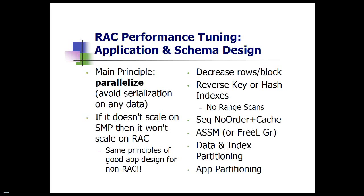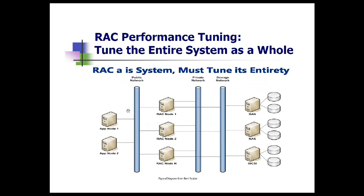It's also possible to partition at the application level, and sometimes that's the simplest best thing to do. The way Facebook manages to run a massive application on MySQL is by partitioning the application — certain tables go to one group of nodes, others to another group handling status updates. You can do something similar with RAC: say you have three applications on a cluster, and each application uses one node. If they don't share data, you've eliminated your interconnect problems because none of that data gets transferred across nodes.